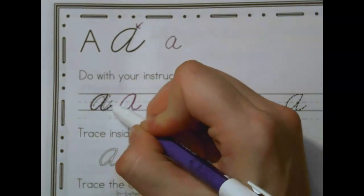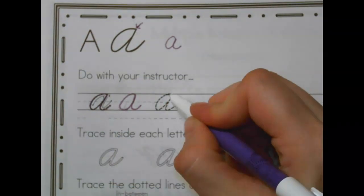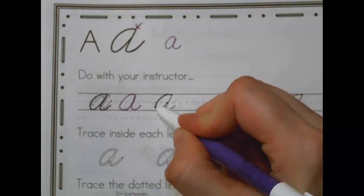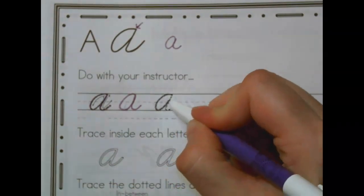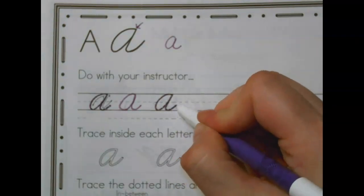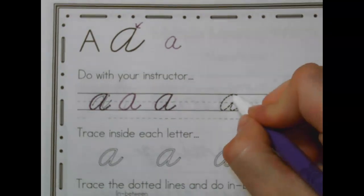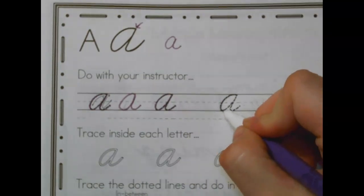Do another one. Start at the top, curve around till you get to the bottom, back up to the top to make a teardrop, ninja down and connect. Let's do another one. Start at the top, all the way to the bottom, back up to make a teardrop, ninja down and connect.